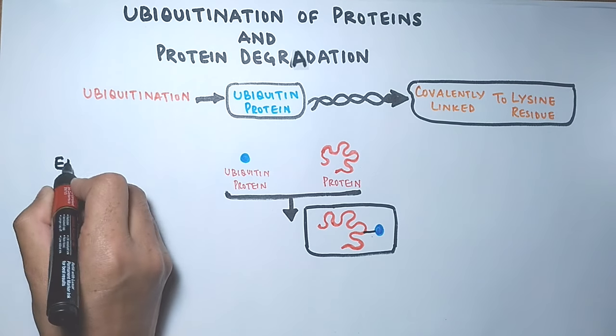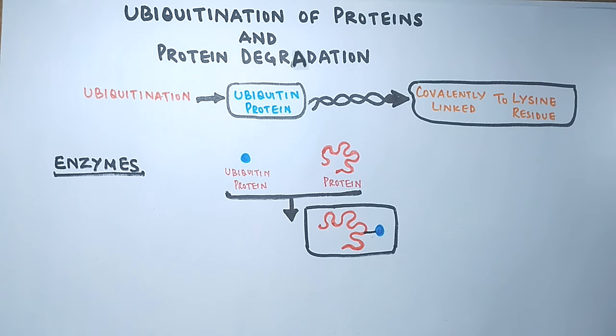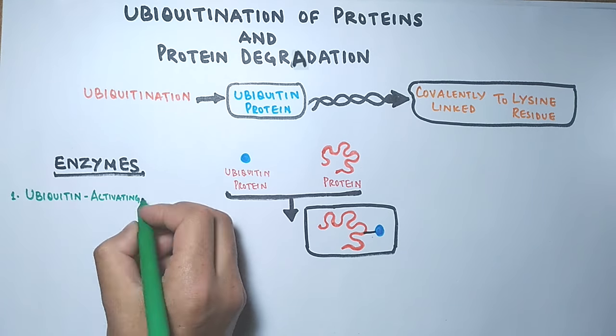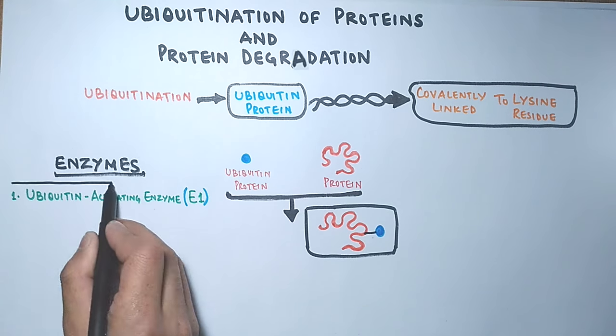Now let's jump towards the enzymes that drive the ubiquitination process. First of all, we have ubiquitin activating enzymes. In short, we call it E1 enzyme.